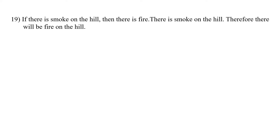Nineteenth: If there is smoke on the hill, then there is fire. There is smoke on the hill; therefore there will be fire on the hill. Here the conclusion is implicitly present in the premise and the premise also provides sufficient evidence for the conclusion. So the argument is of deductive type.